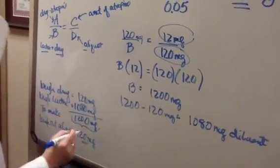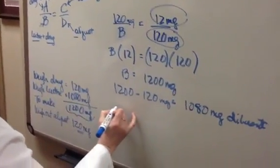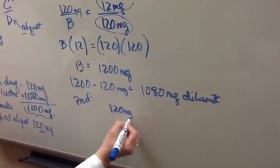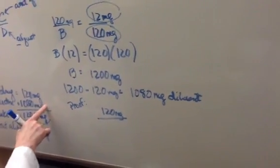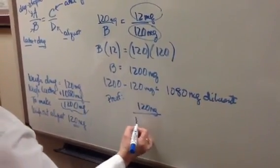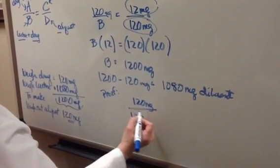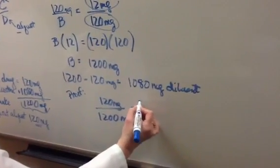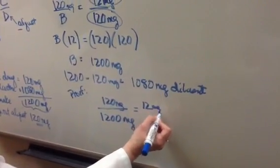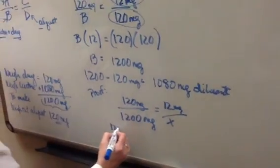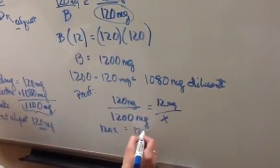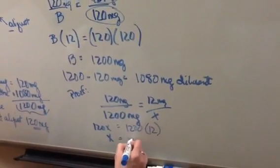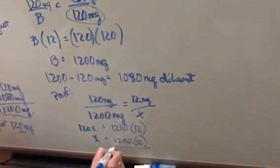And if I want to check to see if that's correct, I just prove it, which I'll do right here. If I weigh out 120 milligrams, mix it with 1,080 milligrams of lactose, then I have 120 milligrams in 1200 milligrams of mixture. So I'm going to have 12 milligrams in X. 120X equals 1200 times 12. X equals 1200 times 12 over 120.